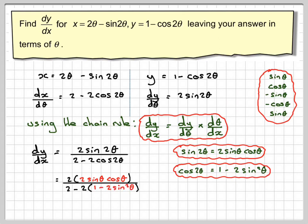We'll substitute that in. So on the top, we're going to get 4 sine theta cos theta, and on the bottom, we're going to get 2 minus 2 plus, minus times minus, 4 sine squared theta.